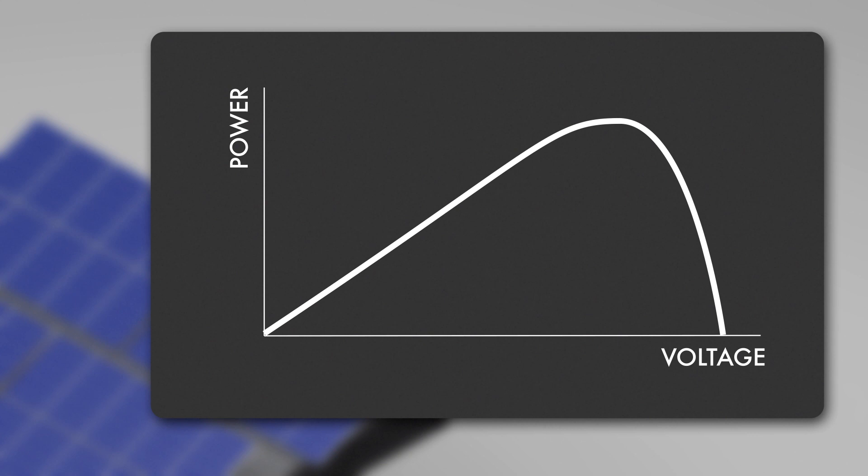There is an optimum operating point, detected by an MPP tracker within each solar inverter, extracting the maximum power of the PV array. This maximum point on the power curve is called maximum powerpoint, or MPP, and the correspondent voltage is called MPP voltage.